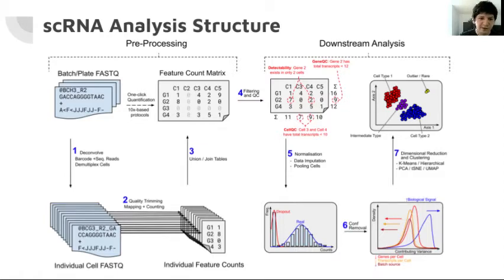So here FASTQ data from the batches are demultiplexed into individual cells either as separate FASTQs or one large file with annotated headers. These are then mapped to yield individual feature counts for each cell which are then joined into a large table which gives the feature count matrix.